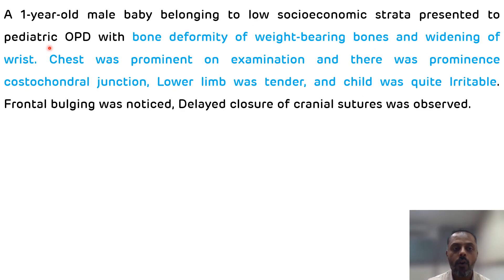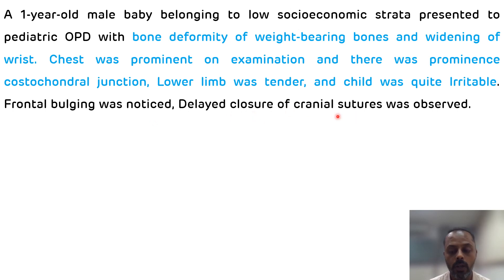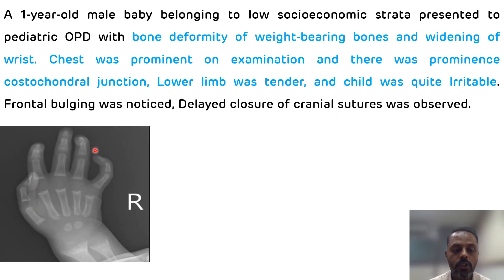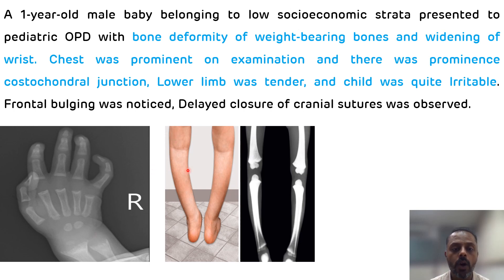The case study is of a one-year-old male baby belonging to low socioeconomic strata, presented to pediatric OPD with bone deformity of weight-bearing bones and widening of the wrist. Rosette was prominent on examination and there was prominence at the osteochondral junction. The lower limb was tender and the child was irritable. Frontal bulging was also noticed and delayed closure of cranial sutures was observed. This x-ray shows widening of the wrist, and this picture shows bow leg, also known as genu varum, along with its x-ray picture.